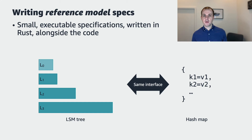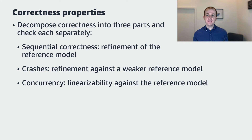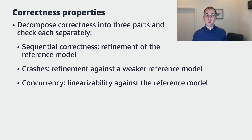This approach to specification is lightweight and usable by engineers, as we'll see in some data towards the end of the talk. Once we have a specification in the form of a reference model, how do we then check that the implementation satisfies the spec? On the surface, this might seem simple — we just want the implementation to conform to the specification, or more precisely, we want the implementation to refine the specification.